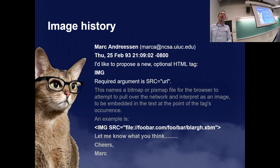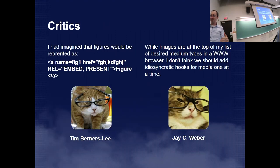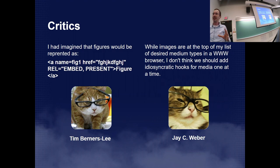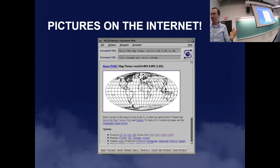Mark Anderson, who was kind of not a team player at NCSA, decided one day to put images on the web and call it the image tag — it would have a SRC URL — and he posted an email. Tim Berners-Lee, who invented the web, was not really into it. Jay Weber thought maybe they should stop and think about how to do this. Literally two hours later there's another email: 'Hey, I put images on the web' — by Mark Anderson. He just went ahead and did it, and it kind of stuck.